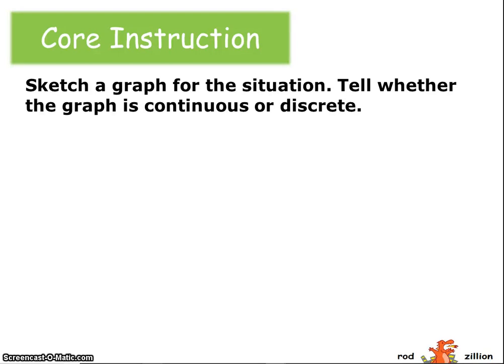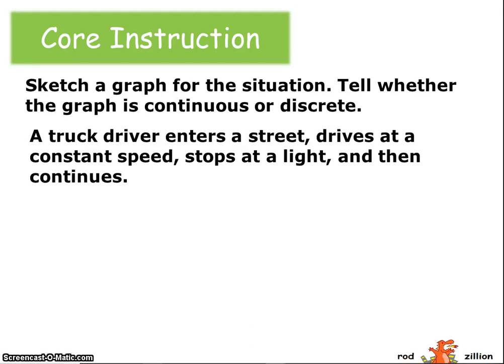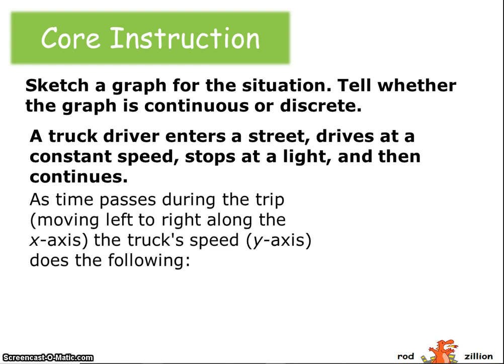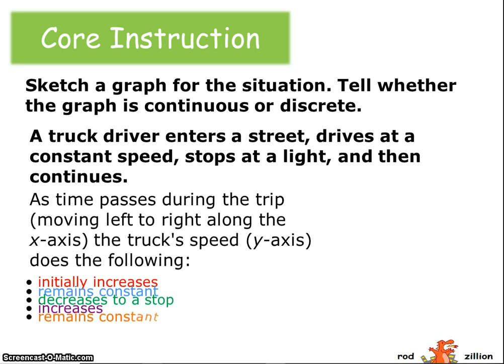We're going to look at sketching a graph for a given situation, then tell if it's continuous or discrete. We have the situation: a truck driver enters the street, drives at a constant speed, stops at a light, and then continues. I notice that as time passes during the trip, the truck's speed is going to do the following: it's going to initially increase, remain constant, decrease to a stop, and then increase only to remain constant again.